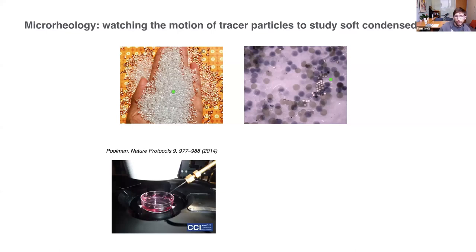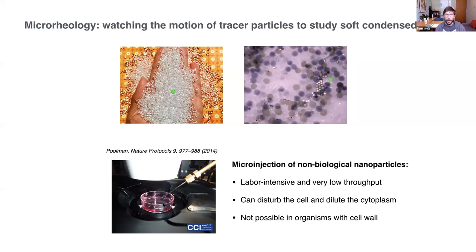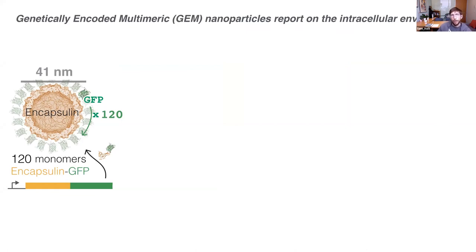Previously, people studied this by microinjecting inert nanoparticles or getting them into cells via pinocytosis — but these techniques were labor-intensive, low-throughput, tended to perturb cells, and were completely impossible in any organism with a cell wall, like S. cerevisiae. To overcome these limitations, we developed genetically encoded multimeric nanoparticles, or GEMs. These are encoded by a gene from hypothermophilic archaea — encapsulin proteins that are single monomers robustly self-assembling into 120 copies to form a precisely defined nanoparticle cage about 40 nanometers in diameter.